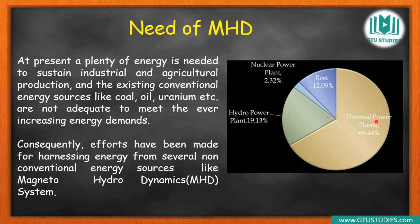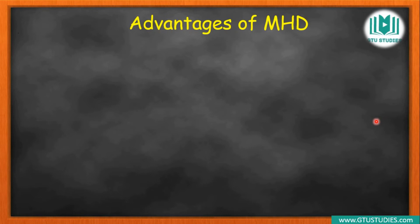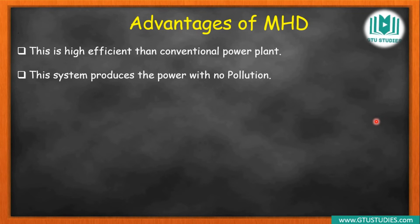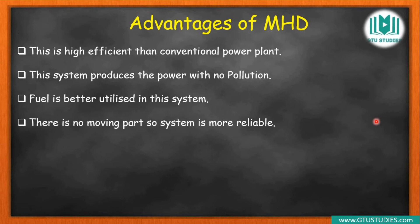The one-step conversion gives higher efficiency. With one-step conversion, maximum heat energy is used, which reduces pollution. The fuel can be used more effectively so it is better utilized. Also, there are no moving parts, so the system is more reliable. Moving parts like turbines are rotating parts that are not easy to handle, and they also produce more noise.